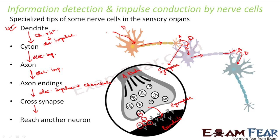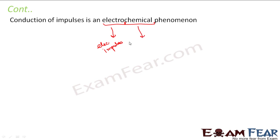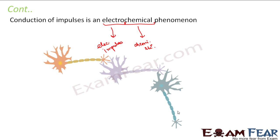Therefore, we can say that conduction of impulses is an electrochemical phenomenon. It is 'electro' because the transfer happens in the form of electrical impulses, and 'chemical' because these electrical impulses are generated as a result of chemical reactions. Also, when electrical impulses have to cross the synapse between two neurons, they are converted into chemicals which transfer across the synapse. Since the entire process involves either chemicals or electrical impulses, it is called an electrochemical phenomenon.